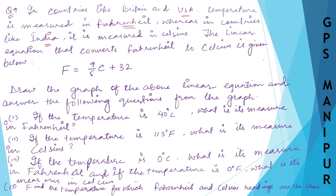The linear equation that converts Fahrenheit to Celsius is given. You know a thermometer — it measures how hot a body is, either in Fahrenheit or degree Celsius. In India we use Celsius, and in USA and Britain they use Fahrenheit. They are different units, like inches and centimeters.